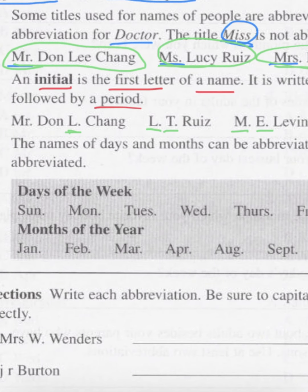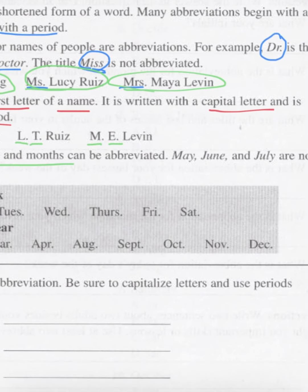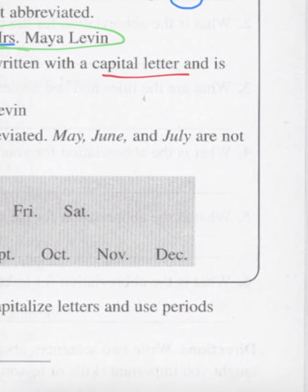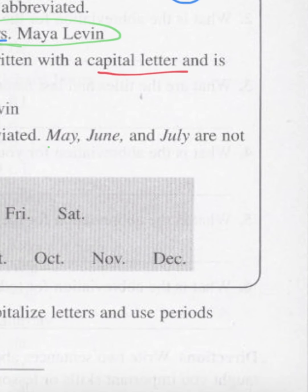The names of days and months can be abbreviated, but not all months are. May, June, and July are not abbreviated because they're so short.